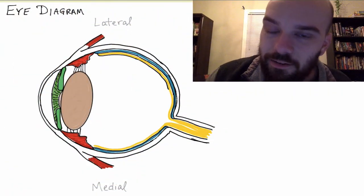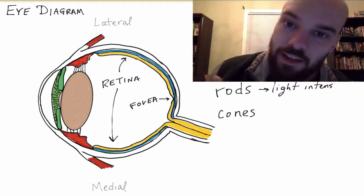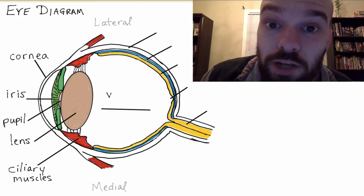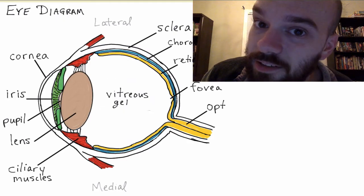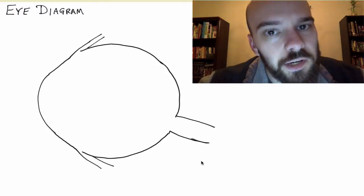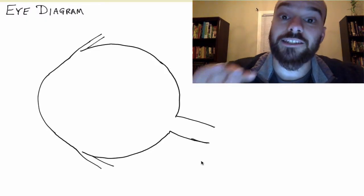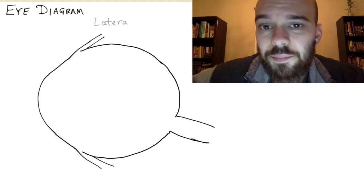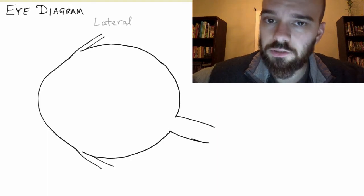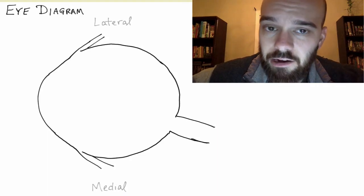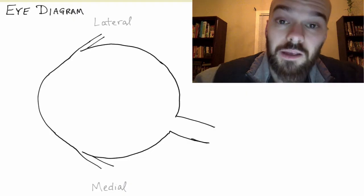Hey, today we're talking about the eye, the parts of the eye, and how those parts work to help you and me see. The first thing we need to do is talk about how this eye is oriented. The top is the lateral side of the eye and the bottom of our diagram is the medial side of the eye.